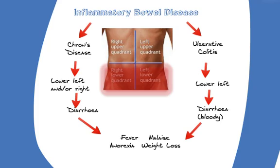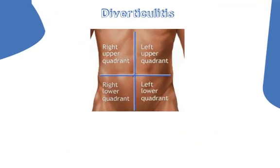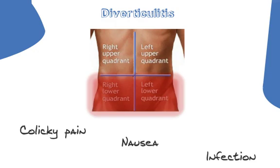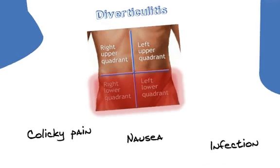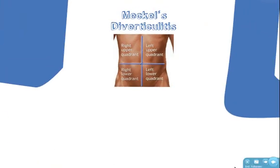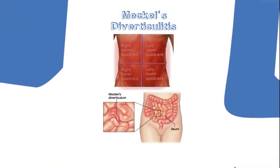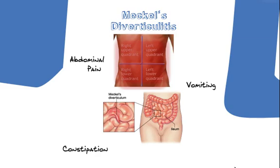Diverticulitis can cause abdominal pain in any of the lower quadrants and in the periumbilical region. It usually presents with vague abdominal symptoms of colicky pain, nausea and signs of infection. Meckel's diverticulitis is effectively intestinal obstruction, so can cause pain, vomiting and constipation in any part of the abdomen. If the pain is in the lower right quadrant, it can mimic appendicitis, so should be considered as a differential diagnosis.